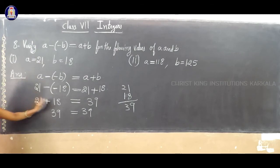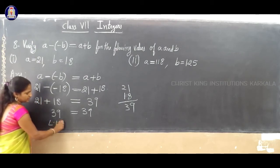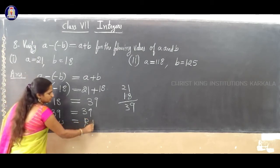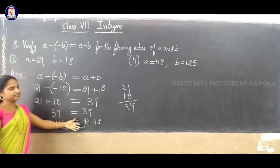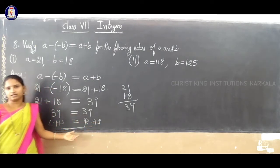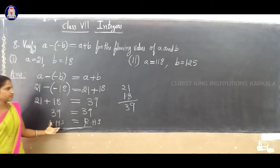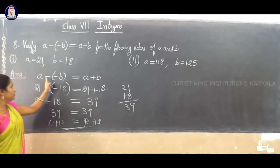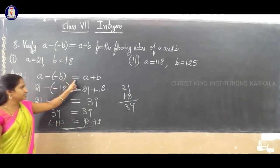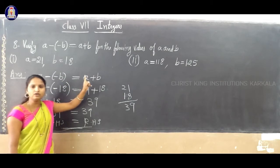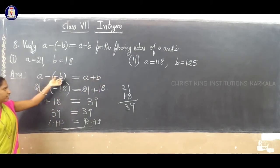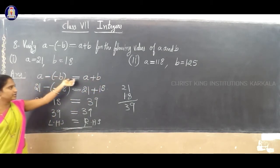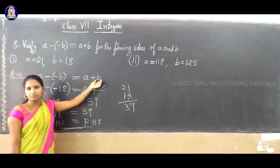Just substitute, then simplify, then check that the LHS answer equals the RHS answer. Here we got the same answer on both sides, which confirms that A minus of minus B is equal to A plus B.